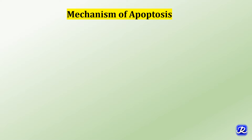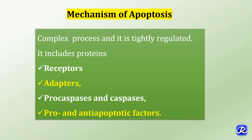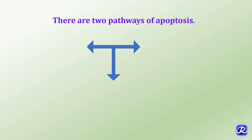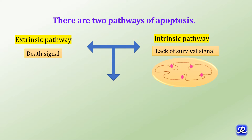Apoptosis is regulated by biochemical pathways that control the balance of death and survival-inducing signals. It is a complex, tightly regulated process involving proteins like receptors, adapters, pro-caspases, and pro- and anti-apoptotic factors. There are two pathways: the extrinsic pathway, which begins with a death signal, and the intrinsic pathway, which begins with lack of a survival signal. The intrinsic pathway is also called the mitochondrial pathway and is responsible for most physiological and pathological apoptosis. Both pathways culminate in activation of caspases.